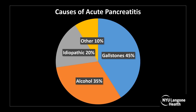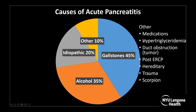What are the causes of acute pancreatitis? About 45% of cases are caused by gallstones, 35% by alcohol, 20% are idiopathic, and other causes account for the remaining 10%, which include medications, hypercholesterolemia, duct obstruction such as a tumor, post-ERCP pancreatitis, hereditary pancreatitis, trauma, and of course the heavily tested scorpion bite.